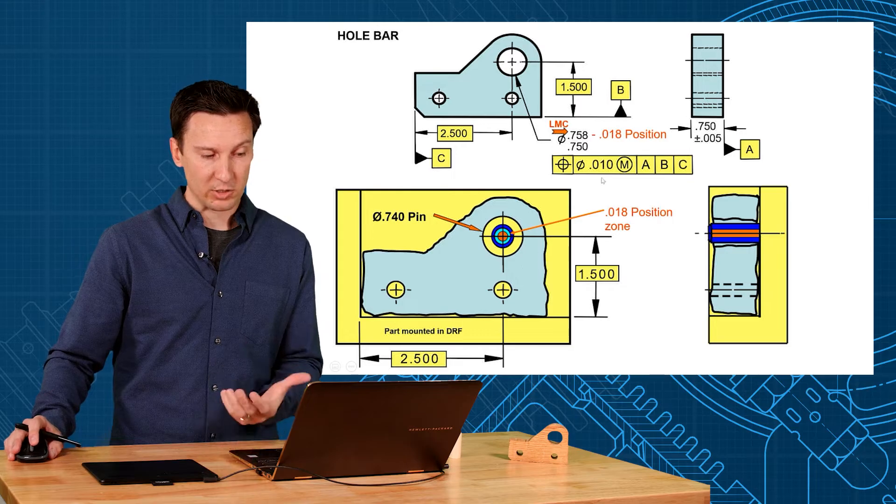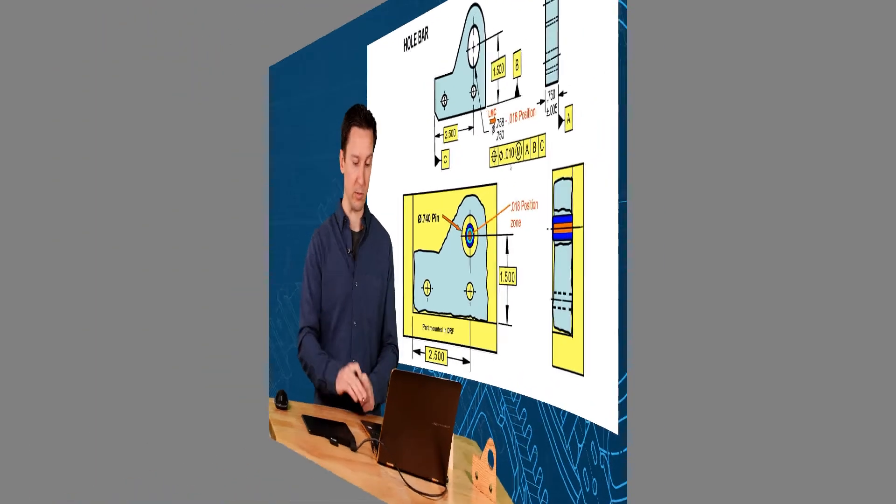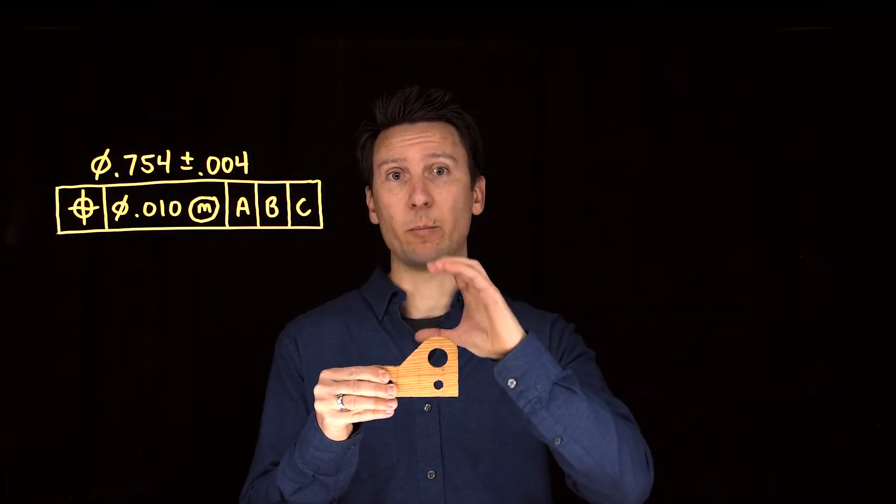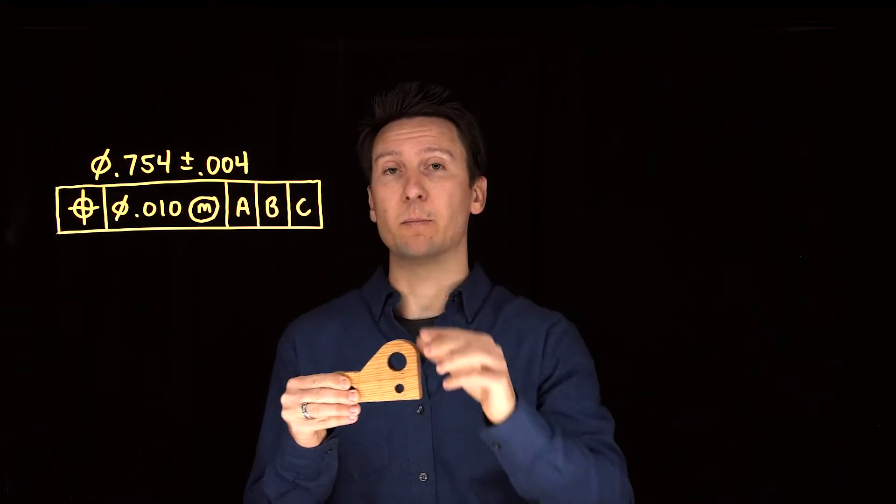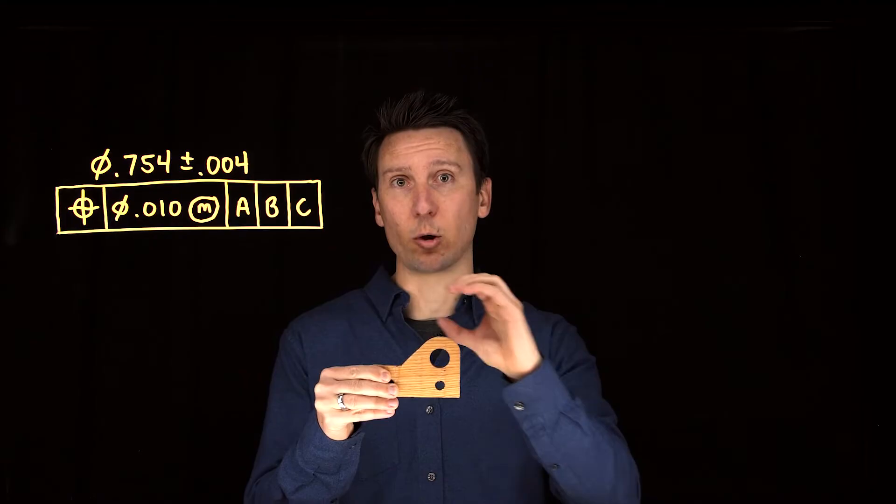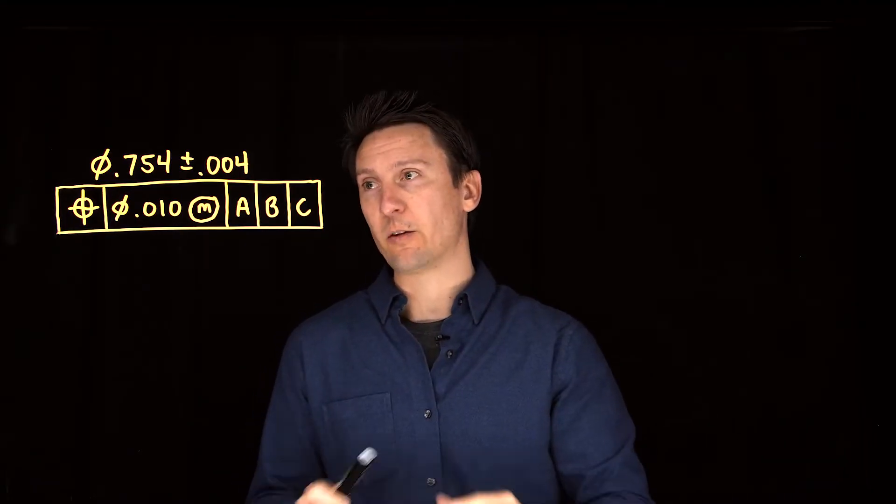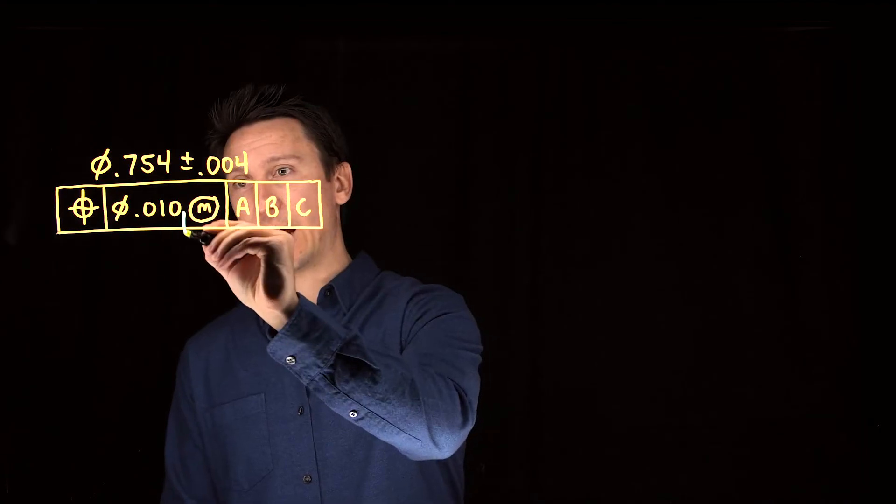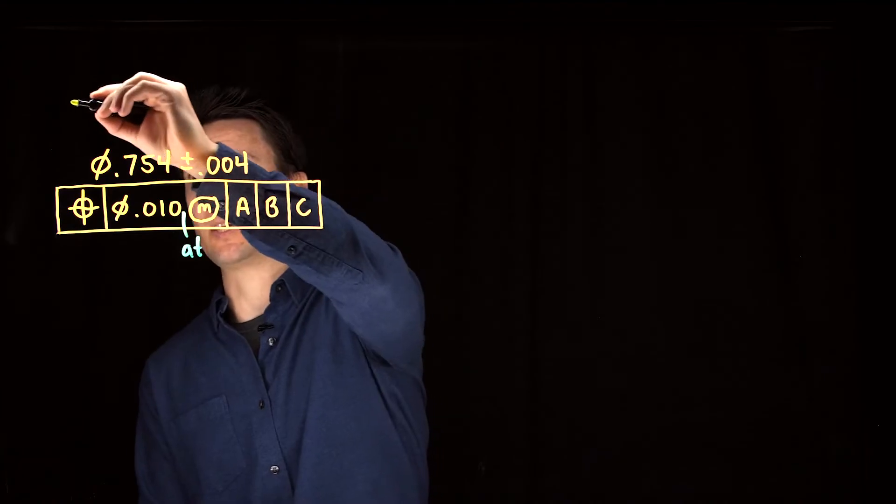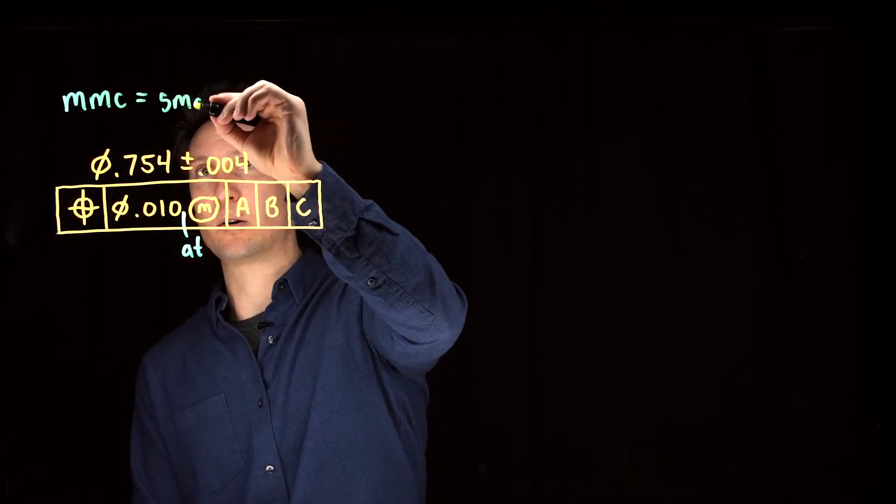So the position tolerance increases as the size of the hole increases. Remember, this hole has two parameters: the size tolerance on the hole telling you how big and small it can be, indicated by the plus or minus four, then it has a position tolerance that controls its location tolerance, how much it can be off from its true position. Now this position tolerance says that at MMC you get a position tolerance of 10 at the MMC. Remember, MMC equals smallest hole.